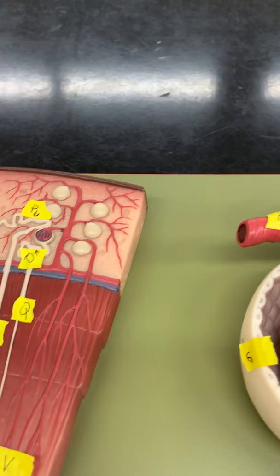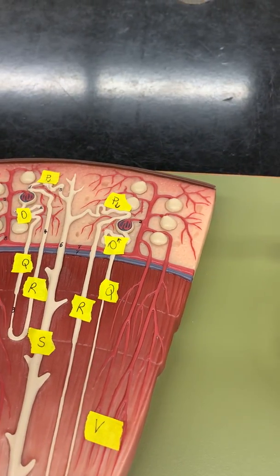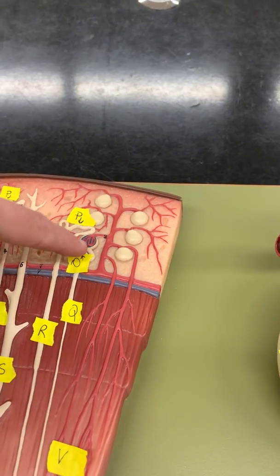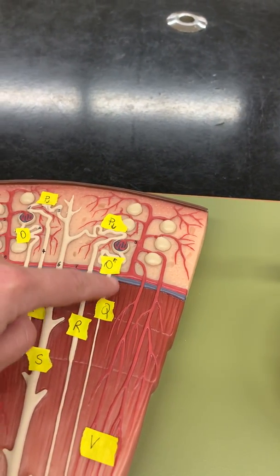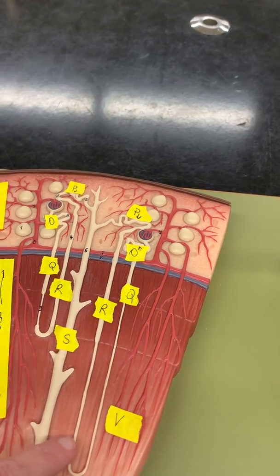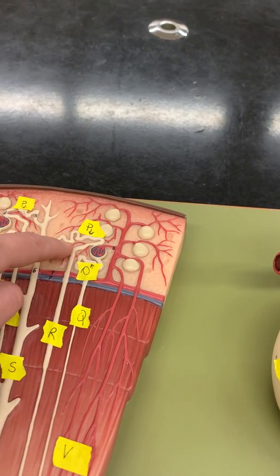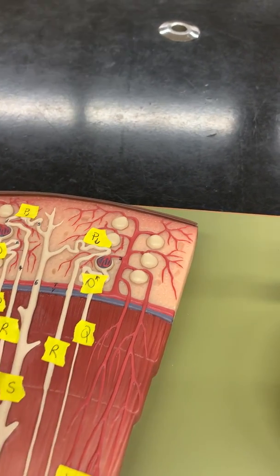Now you'll notice that this nephron is backwards, so don't memorize it. Just find the glomerulus. So from the glomerulus, you have the proximal convoluted tubule. Then you go down the descending loop of Henle, you come up the ascending loop of Henle, into the distal convoluted tubule, on down into the collecting duct.